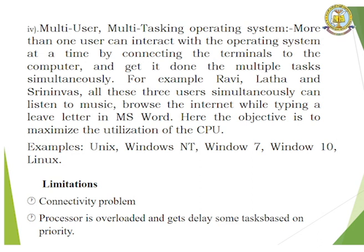Multi-user multi-tasking operating system allows more than one user to interact with the OS at a time by connecting terminals to the computer and completing multiple tasks simultaneously. For example, Ravi, Latha, and Sreenivas can all simultaneously listen to music, browse the internet, and work on MS Word. The objective is to maximize CPU utilization. Examples include Unix, Windows NT, Windows 7, Windows 10, and Linux. Limitations include connectivity problems and processor overload causing delays based on priority.